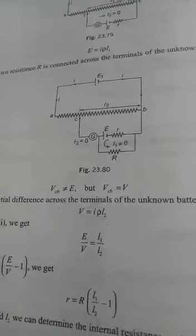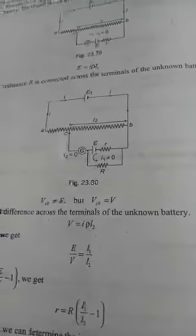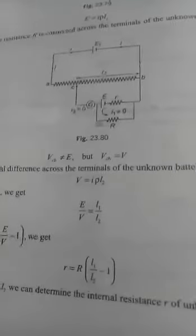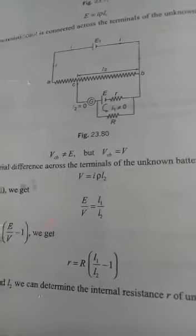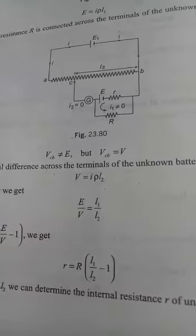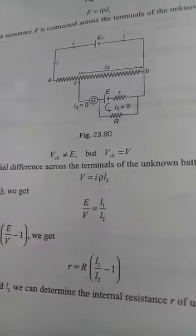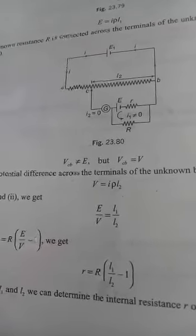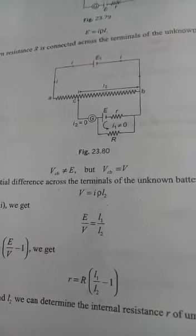You already had an expression for E. From there, you can get the expression for E by V. Simply bring into the previous equation, substitute there. E by V will become l1 by l2, and by this method you can find out the value of internal resistance.